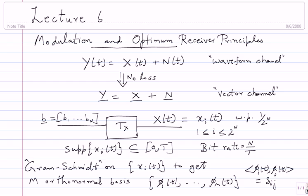This is a simple process by which I've gone from 2^n signals to m basis vectors. Once I have the basis, I have a simple way to vectorize my signals. Instead of defining x(t) at every time instance, I assume the basis is known to both transmitter and receiver — conveyed by some other means ahead of time. Then the only thing I need to specify to describe x_i(t) is the coefficients of the basis vectors.